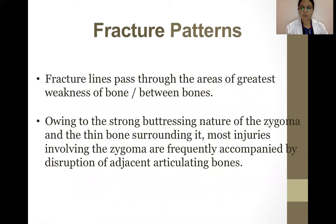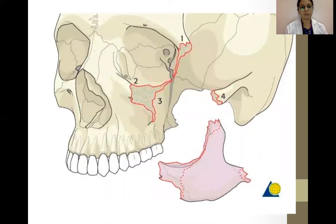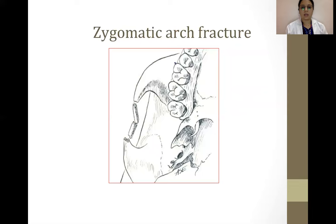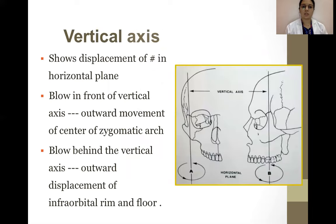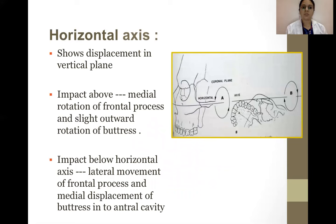Coming to the fracture patterns: the fracture lines pass through the areas of greatest weakness or between bones. Owing to the strong buttressing nature of the zygoma and the thin bone surrounding it, most injuries involving the zygoma are frequently accompanied by disruption of adjacent articulating bones. The vertical axis shows displacement in the horizontal plane — a blow in front of the vertical axis produces outward movement of the center of the zygomatic arch, while a blow behind leads to outward displacement of the infraorbital rim and floor. The horizontal axis shows displacement in the vertical plane: impact above leads to medial rotation of the frontal process and slight outward rotation of the buttress, while impact below leads to lateral movement of the frontal process and medial displacement of the buttress into the antral cavity.